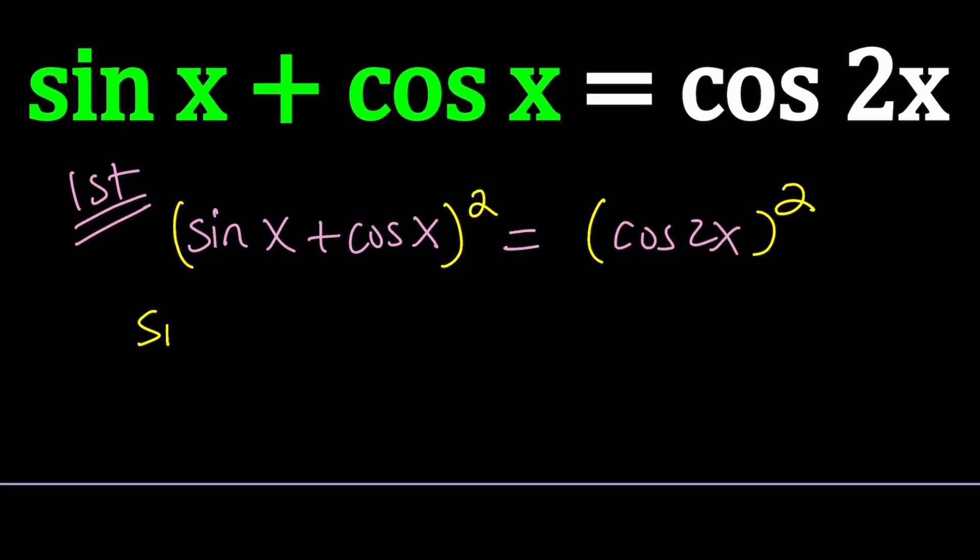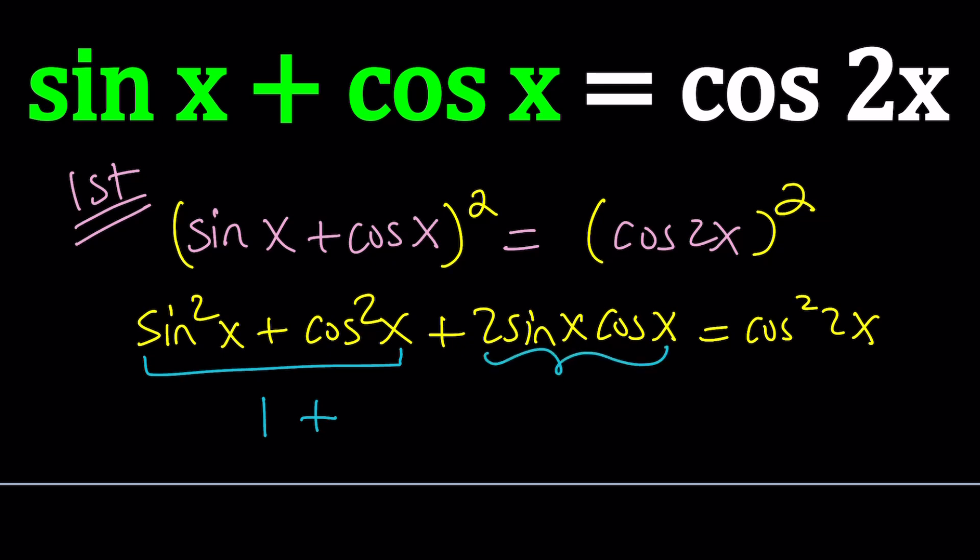First of all, this gives us sine squared x plus cosine squared x plus 2 sine x cosine x. And the right hand side is just a perfect square. Now sine squared plus cosine squared is equal to 1, so that's why we are squaring both sides. And not only that, this gives us the double angle formula for sine. If you remember, that's equivalent to sine 2x.